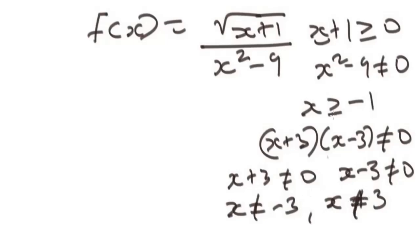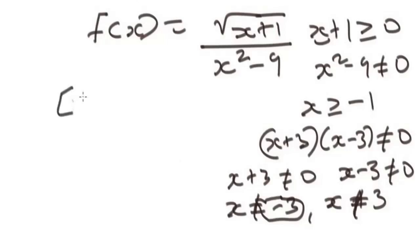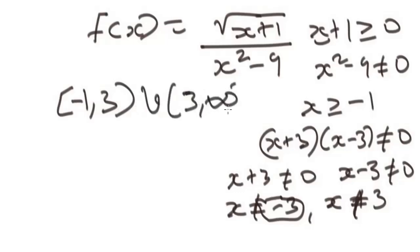To represent this in interval notation, we have two conditions intersecting: x ≥ −1 and x ≠ 3. Since x = −3 is already excluded by x ≥ −1, we only need to exclude x = 3. The domain in interval notation is [−1, 3) union (3, ∞), not including 3.